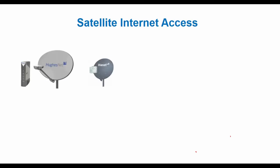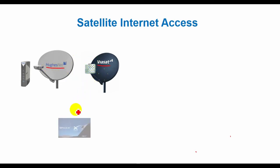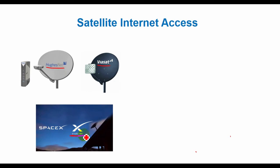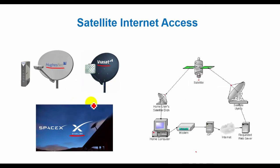HughesNet and Viasat are the two primary residential satellite internet providers. Recently, SpaceX has launched Starlink internet satellites with the intent of increasing the number of low-cost global broadband capabilities. Satellite access provides a viable internet access solution for those who cannot get other methods of broadband. Satellite internet offers an always-on connection with download speeds considerably faster than an old dial-up connection.